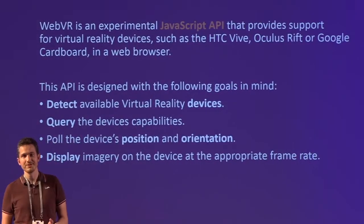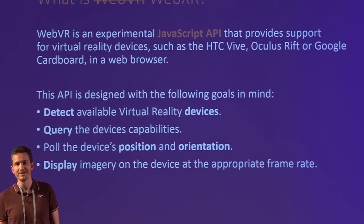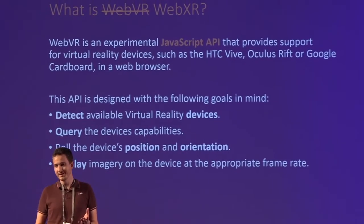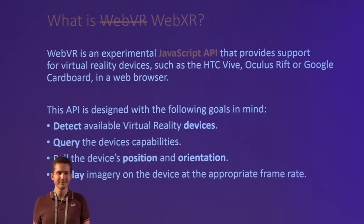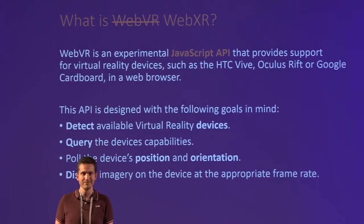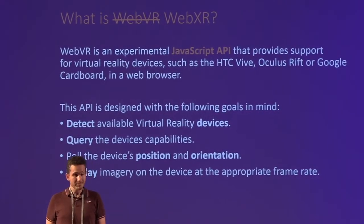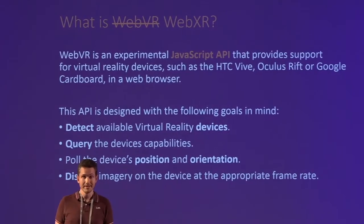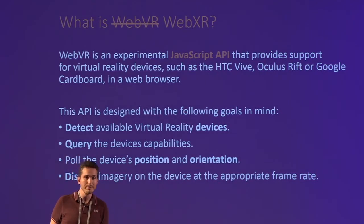This definition up here is taken straight from Wikipedia, and I think it's really good and pretty accurate. The one thing you can discuss is whether it's really still experimental, because as we'll see in the next slide, it's actually fully released on quite a lot of platforms and devices. In a nutshell, it's a browser API that you access via JavaScript, and it allows us to learn about what the browser and the device can do.